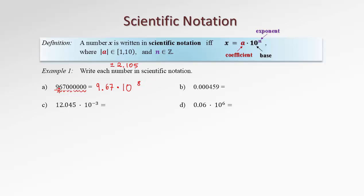So our number, 967 million, can be written in scientific notation as 9.67 times 10 to the 8. Now let's go to the next number. This time the number is smaller than 1. Again, the rule is: take the first non-zero digit and place a dot, copy the rest, then fix the situation by multiplying by a power of 10. The decimal dot was placed here, so we need to shift it 1, 2, 3, 4 places. Therefore, the exponent is negative 4.